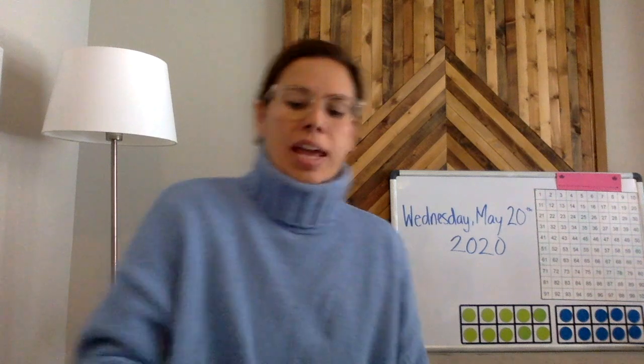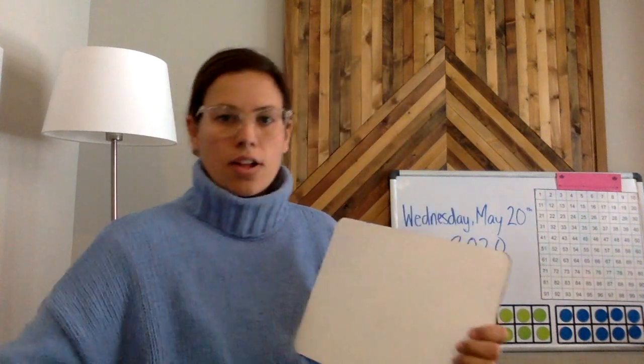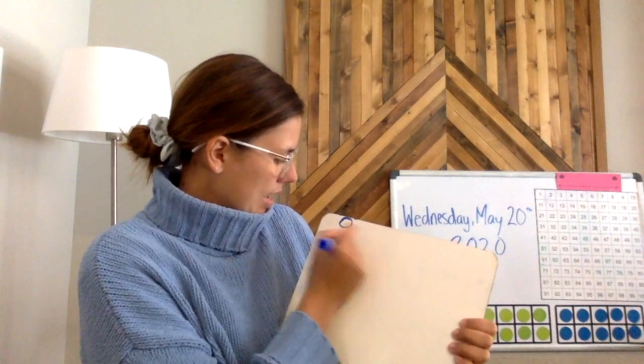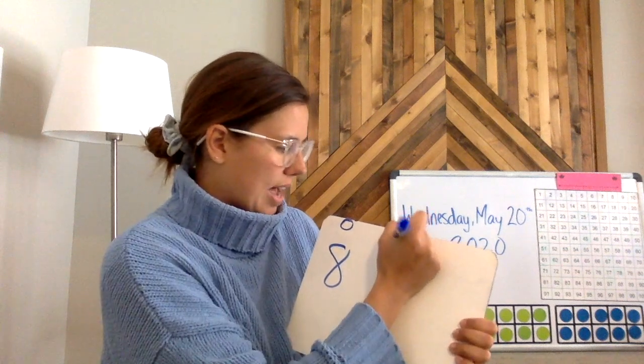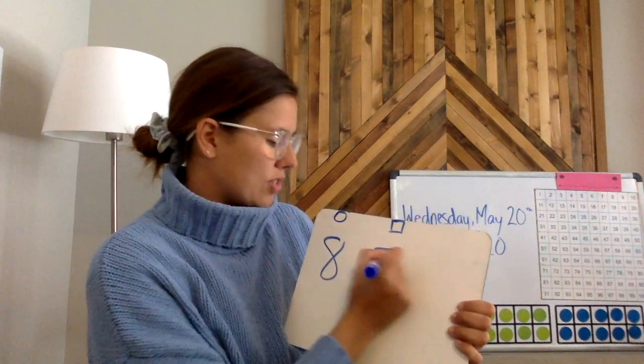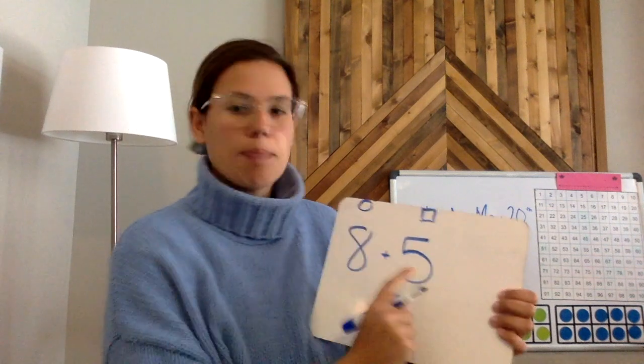So if he takes those eight cents and now he's going to add the square to it. So for the circles, he spent eight cents and now he needs to add the one square. He only used one square, so that was five cents. So he's going to try to do 8 + 5.